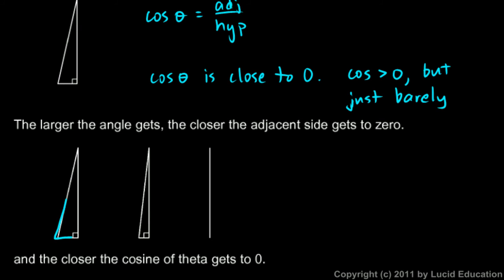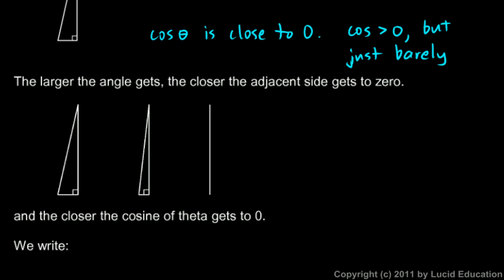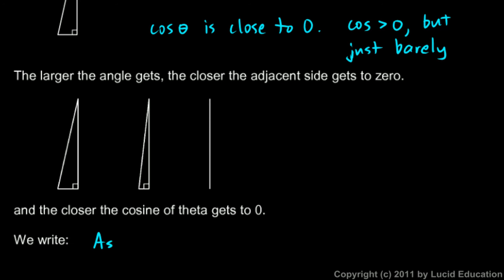The larger the angle gets, the closer the adjacent side gets to being 0. You can see here's a larger angle, and then an even larger angle. You can imagine this angle becoming 90 degrees — again we have the degenerate triangle — so the adjacent side gets shorter and shorter and eventually all the way to 0. We can write: as theta approaches 90 degrees, the cosine of theta approaches 0.